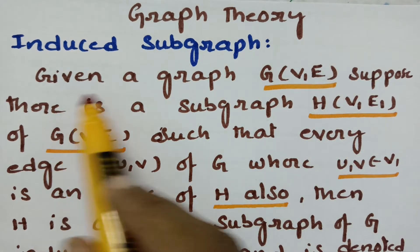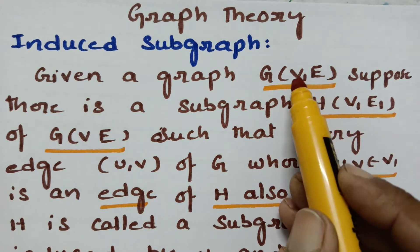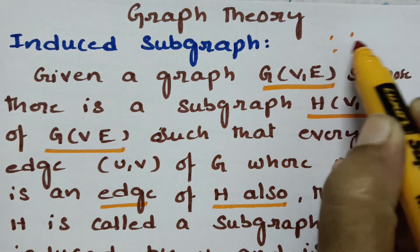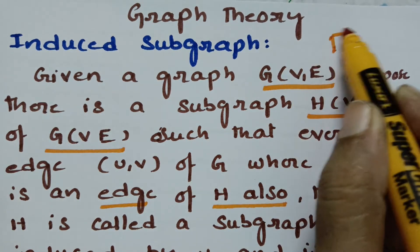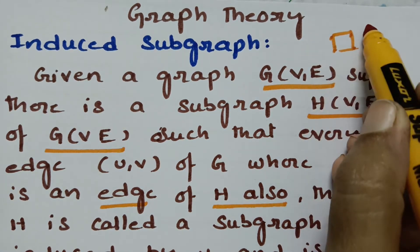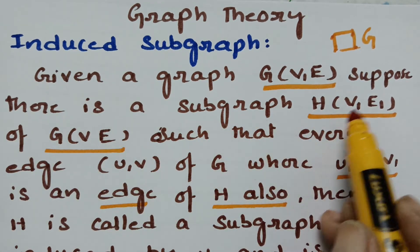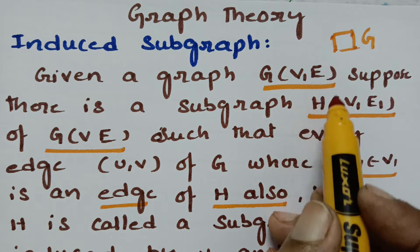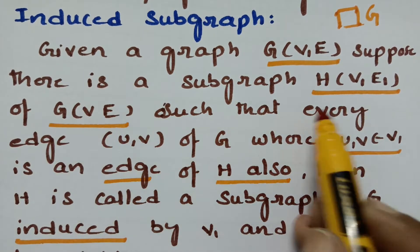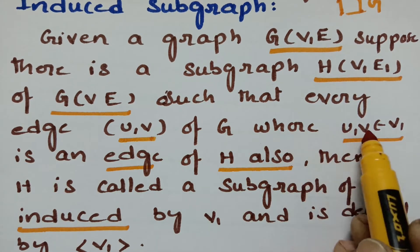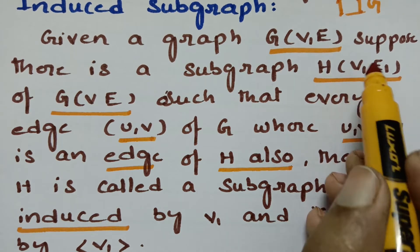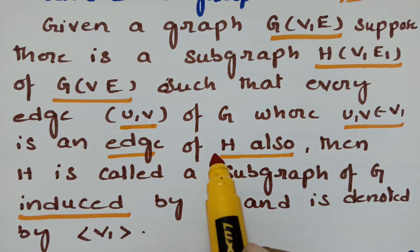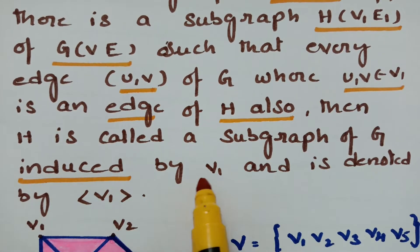Given a graph G(V, E), V is the set of vertices and E is the set of edges or lines. Suppose there is a subgraph H(V1, E1) — if we take a subset from V and a subset of edges from the main set to form a subgraph of G, such that every edge of G where u, v belongs to V1 is also an edge of H, then H is called a subgraph of G induced by V1.